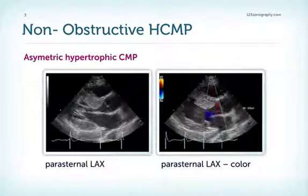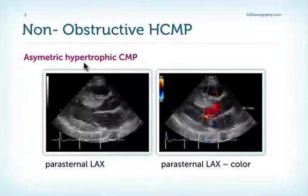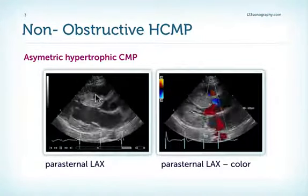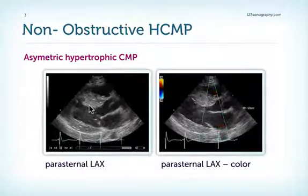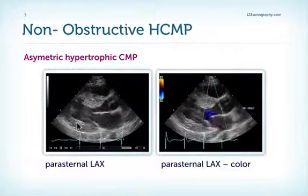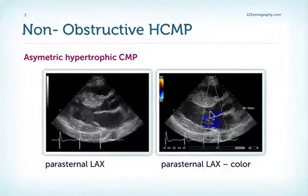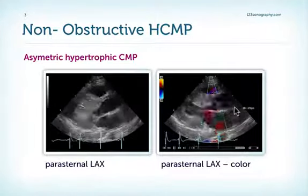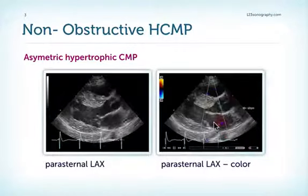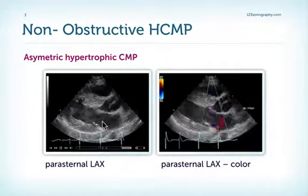First, I would like to discuss the non-obstructive types of hypertrophic cardiomyopathy, specifically the asymmetric hypertrophic cardiomyopathy. This is such an example. You can immediately see that the patient has significant hypertrophy, but this hypertrophy is related mostly to the septum and not as much to the posterolateral wall, so it's asymmetric. Also note that there is no obstruction in the LVOT, so we do not have turbulent flow with color Doppler. There's only minor mitral regurgitation present, and we also have a normal motion of the mitral valve.